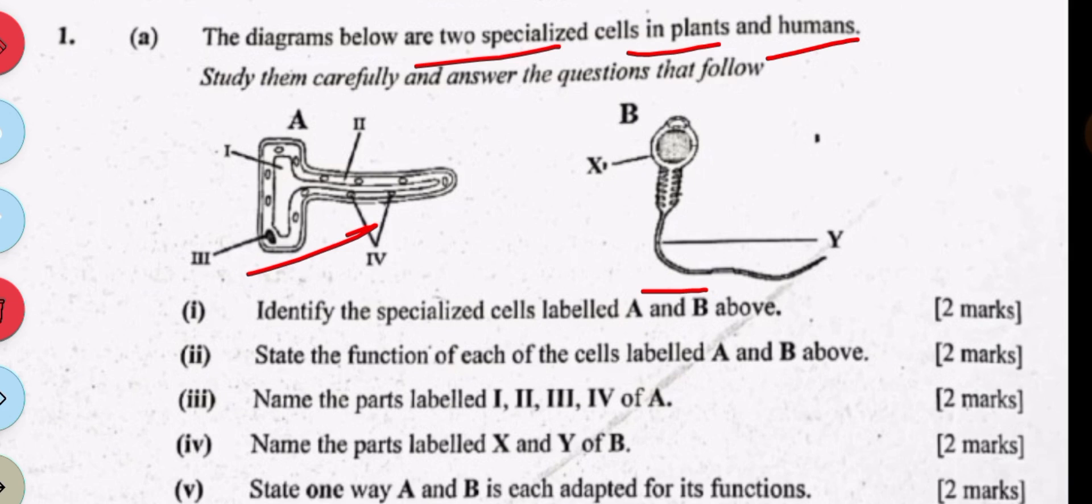A is the one in the plant and B is the one in the animal. A is called root hair cells, or the root hair cell.